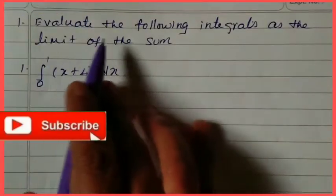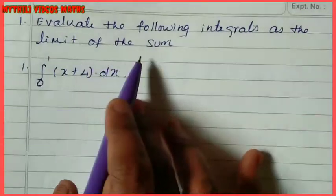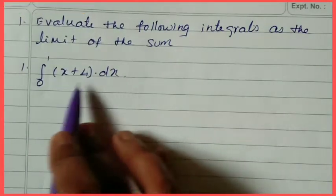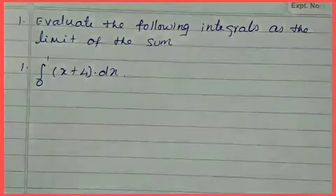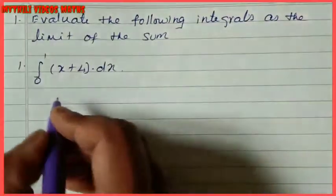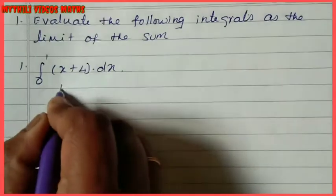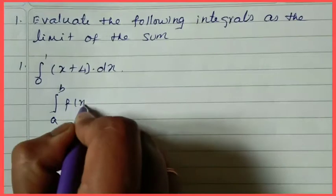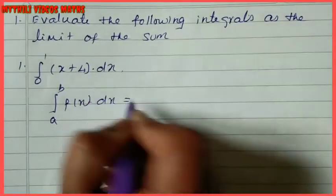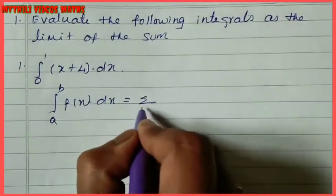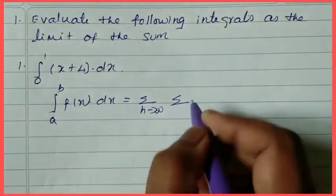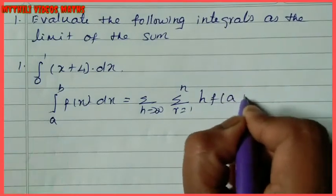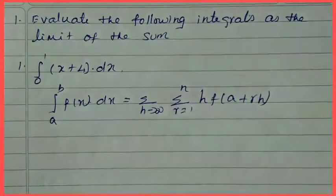We'll go to the sums. The first sum is: evaluate the following integral as the limit of the sum — integration of 0 to 1 of (x + 4) dx. First, we note the formula: integral from a to b of f(x) dx equals limit n tends to infinity, summation r equal to 1 to n, h times f(a + rh). This is the formula.